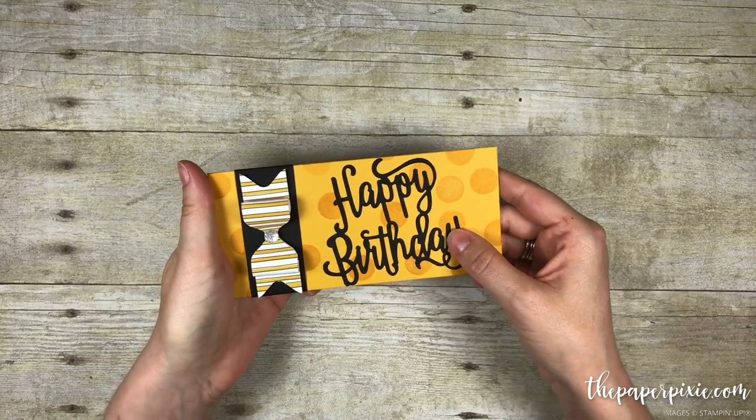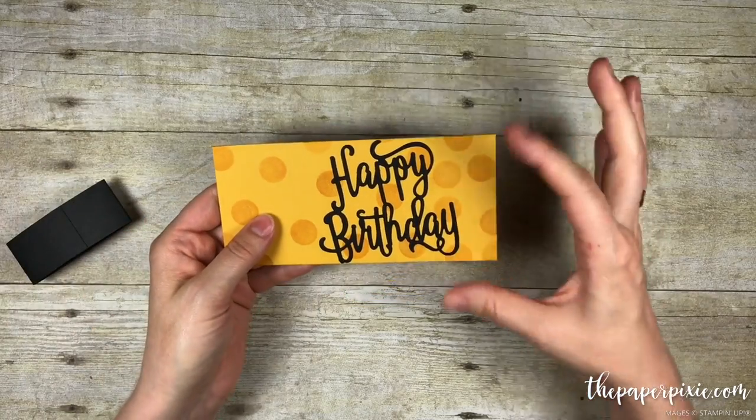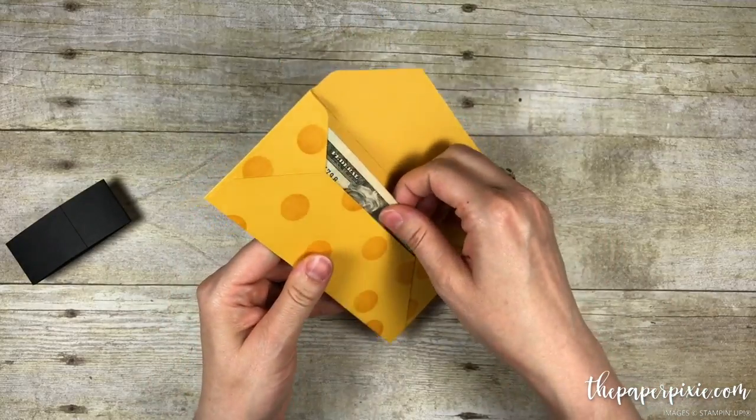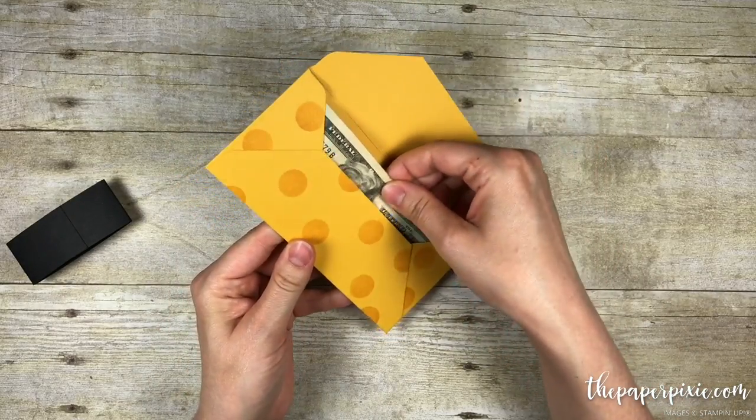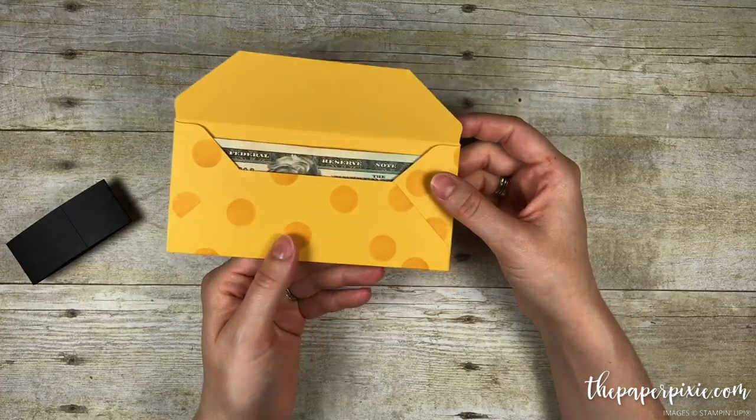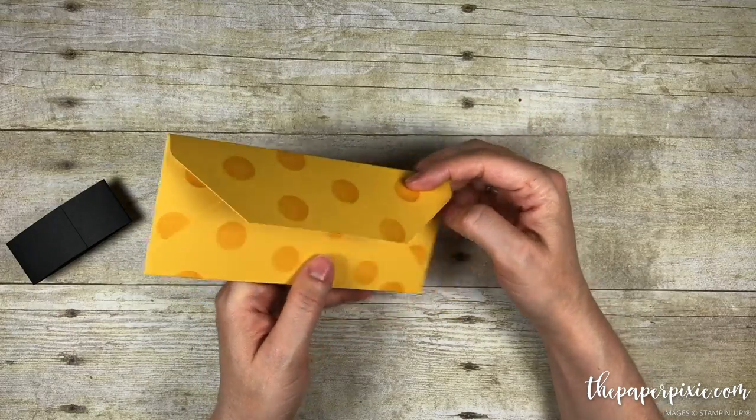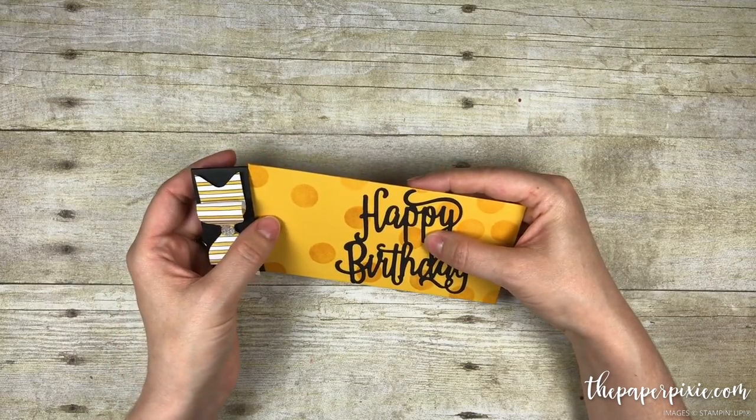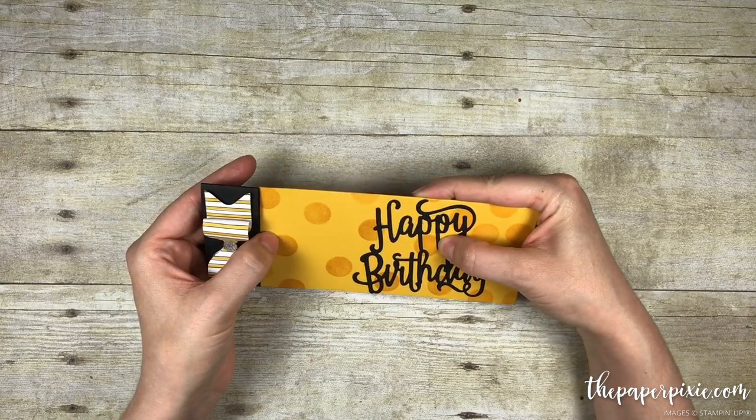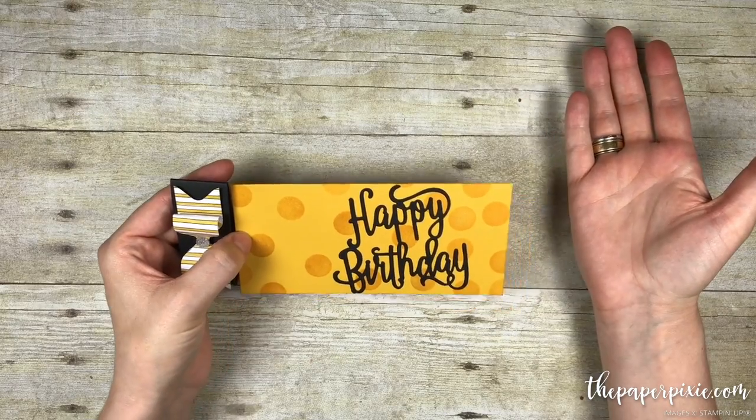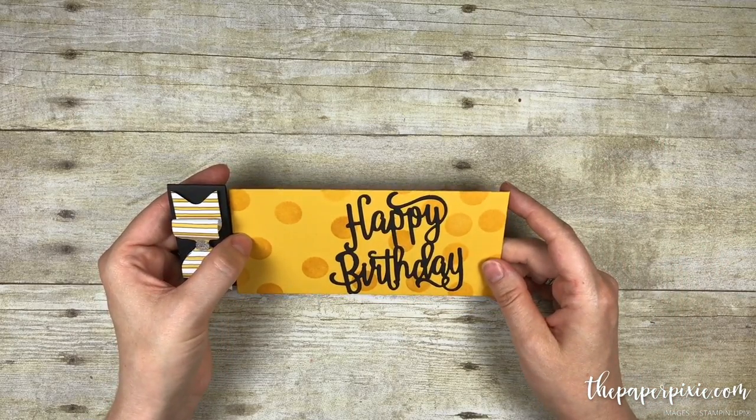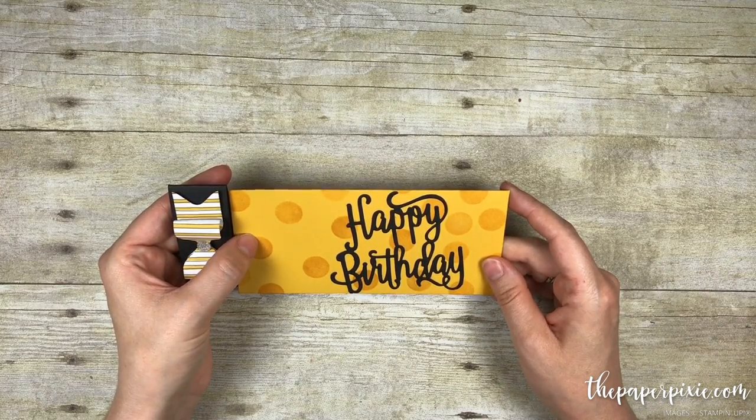Before I created the project, I knew that I wanted an envelope to hold money or a check. So I measured the size of a dollar bill and it measures approximately six and one eighth by two and five eighths. Using an app called the envelope generator, I entered those measurements in and the result provided me with the size of card stock I needed to start with as well as the starting score line on the envelope punch board.